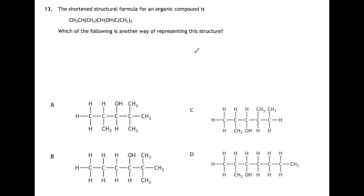Question thirteen: the shortened structural formula for an organic compound is shown below. Which is the following another way of representing this structure? That just means you need to draw this out in full. So we're starting here with CH3. I'm not going to show the H's on the structure. Where we've got a bracket, that's a branch on the preceding carbon. So here we've got OH as a branch, and then we have a carbon here with 3 CH3 groups attached. So the answer for this one is the one that matches, which is A.